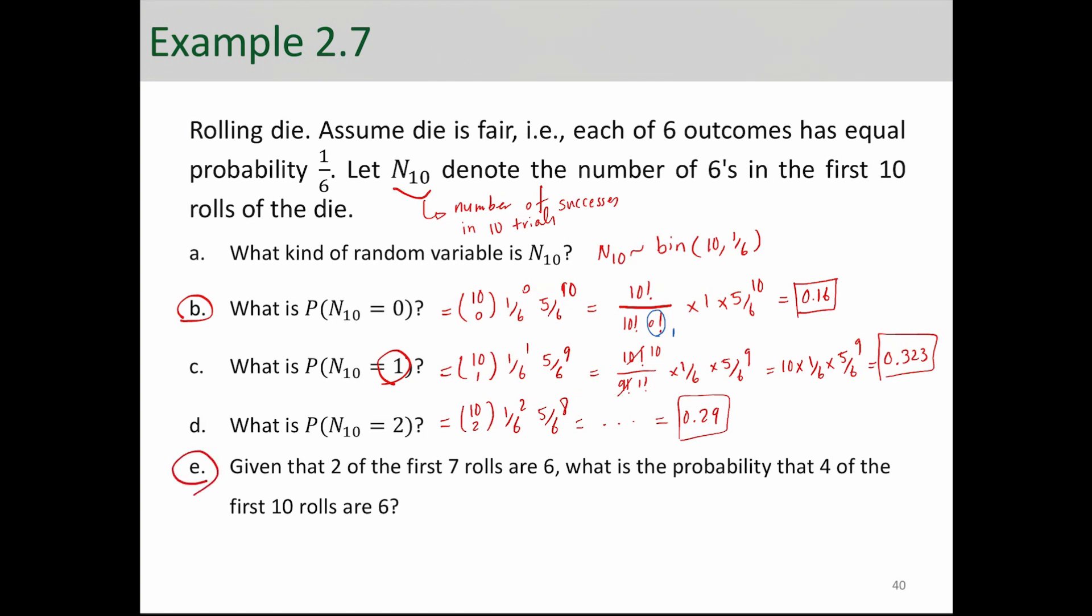Now here's the interesting part of this problem. Given that 2 of the first 7 rolls are 6, what is the probability that 4 of the first 10 rolls are 6? So let's read that again. Given that 2 of the first 7 rolls are 6, basically out of 7 trials we got 2 successes. Right? What is the probability that out of 10 trials we get 4 successes? So we have to incorporate this given information into our calculations.